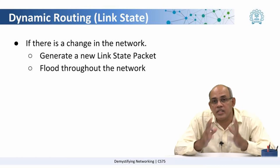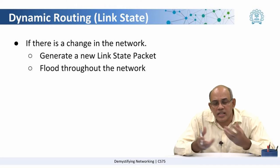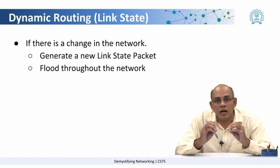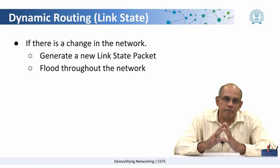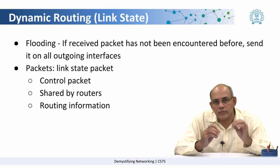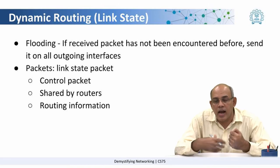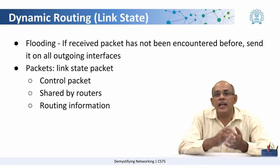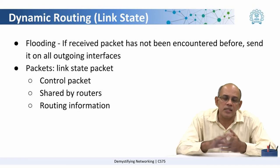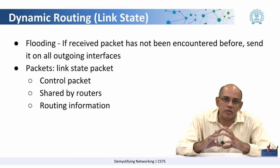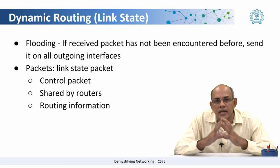What happens when something changes in the network? When a change occurs, a new link state packet is generated and it is again flooded throughout the network. Flooding means that if a router receives a packet on an interface and it has not seen that packet before, it sends the packet on all its outgoing interfaces. These are control packets used only among routers for constructing their routing tables.